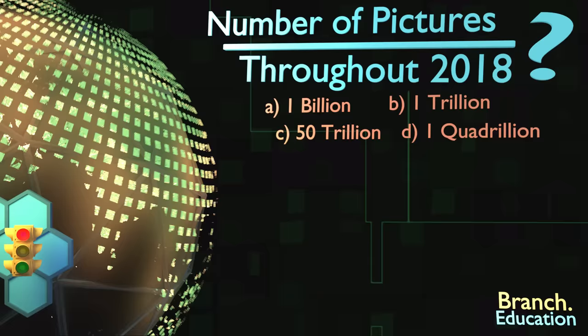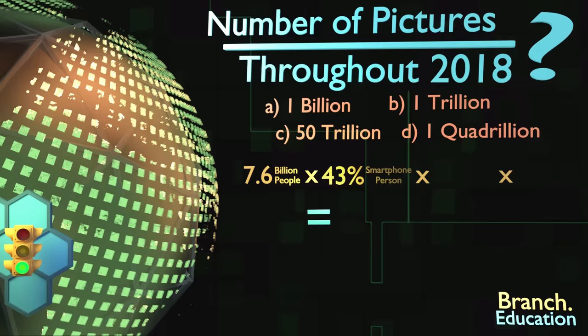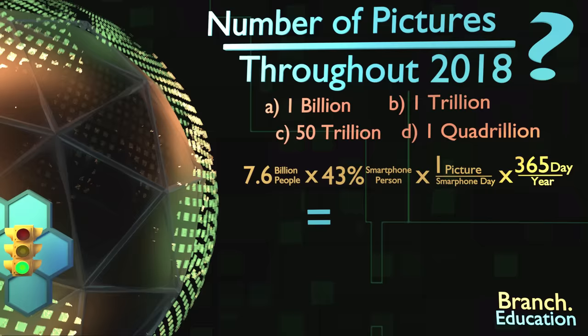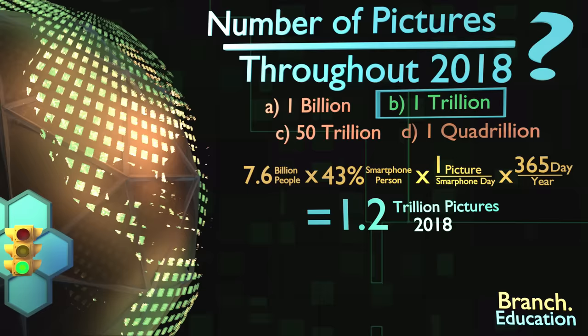Here's some stuff to help you out. There are 7.6 billion humans on Earth, the percentage of people across the globe who own smartphones is about 43%, and let's say each person takes around one photo a day. Thus the answer is around 1.2 trillion photos, so 1 trillion is a pretty good guess.